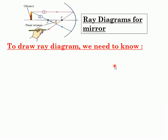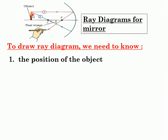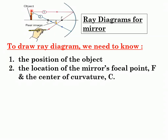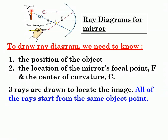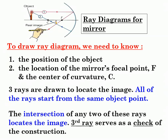Ray diagrams for curved mirrors — before we draw, there are a few things we need to know. Number one, the position of the object; we normally take the top of the object. Second, the location of the mirror's focal points and the centre of curvature. There will be three rays to draw, all starting from the top of the object, but we only need two — the intersection of any two rays locates the image. The third ray serves to check the construction.